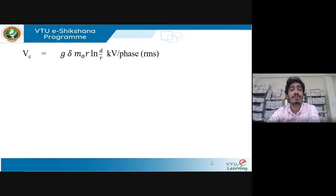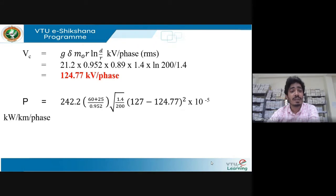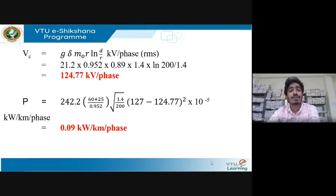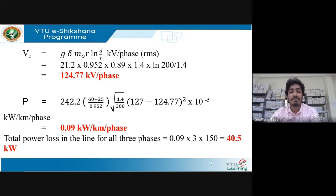With the updated delta, V_c is recalculated as 124.77 kV per phase. Finding V_c is necessary because corona power loss requires the critical disruptive voltage. The power loss for three phases over a 150 km line now corresponds to 40.5 kilowatts.